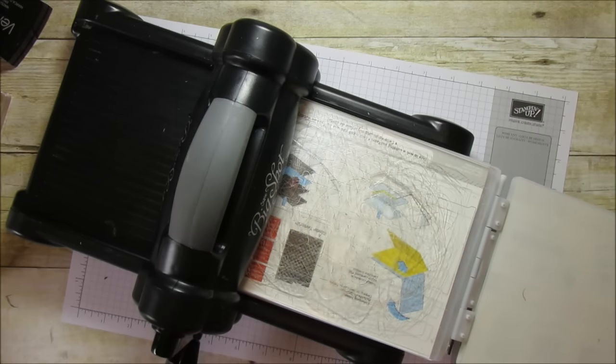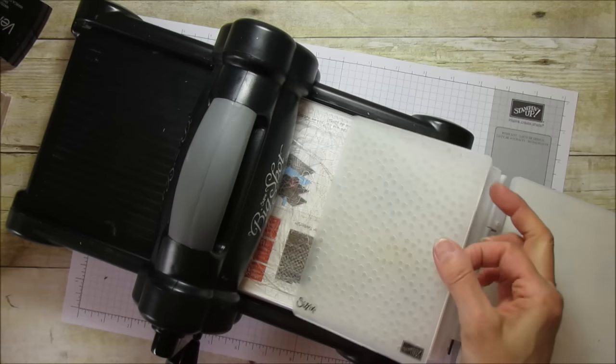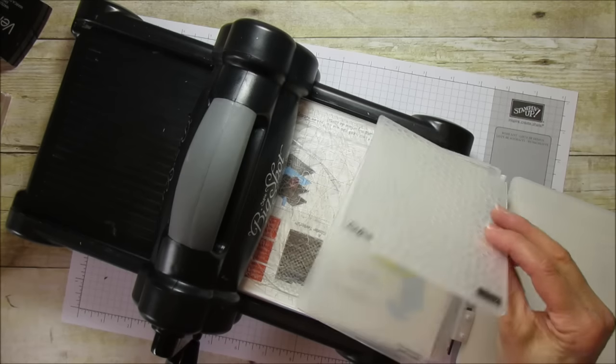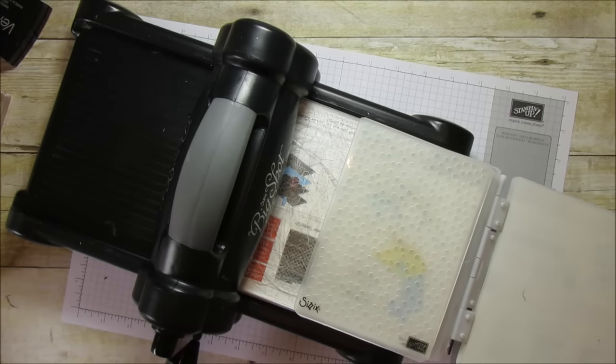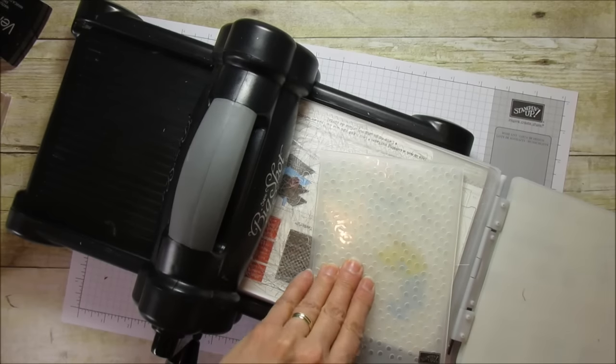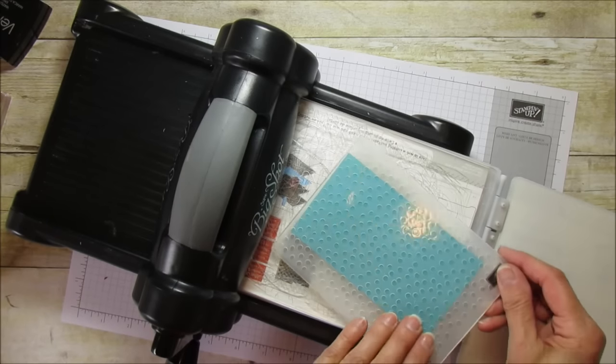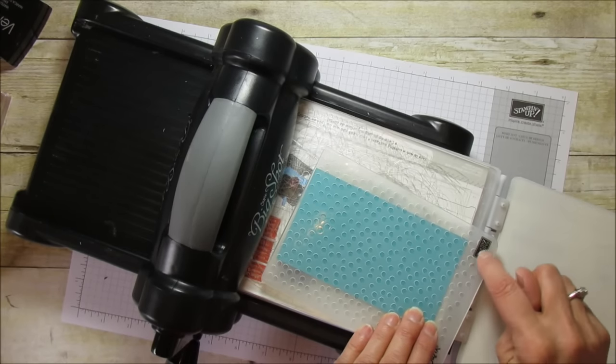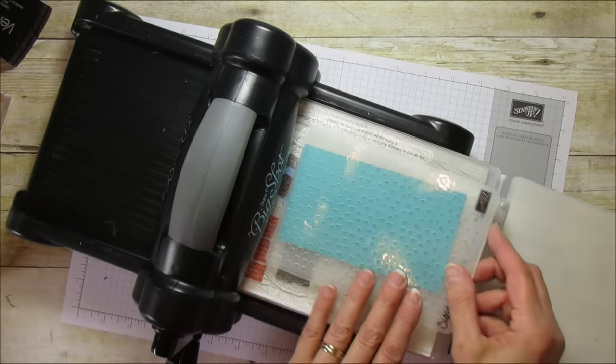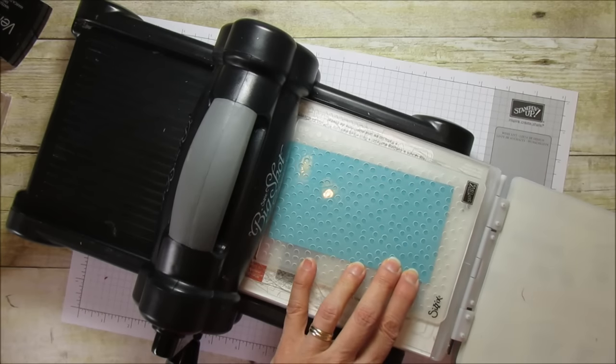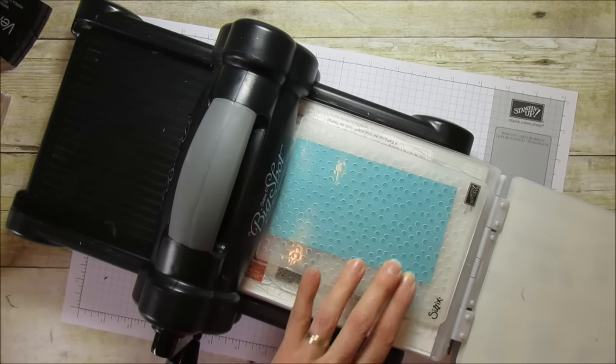I'm going to use the Decorative Dots embossing folder which looks just like this. I'll grab my designer series paper and put it inside like that. I always put it where it says Stampin' Up because that means I'll show you in a minute how it will be embossed. Then put another plate on here and we'll run it through.